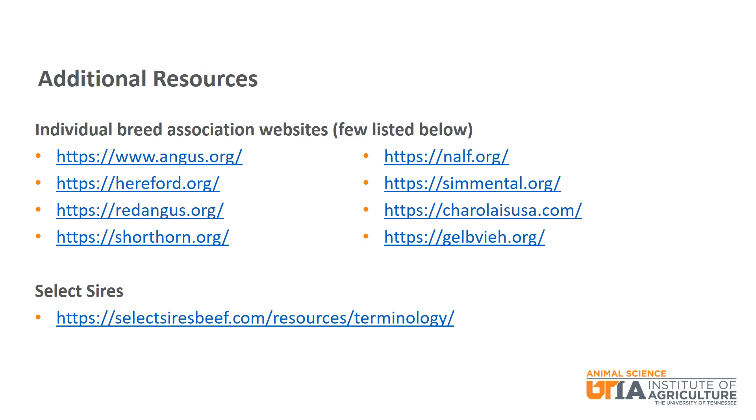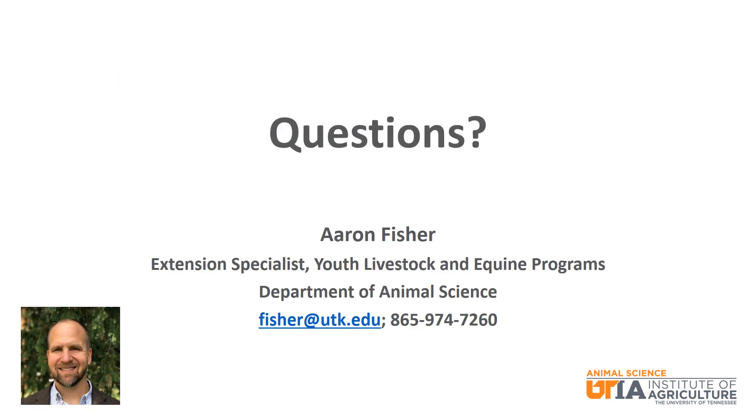For more resources regarding EPDs and selection indexes, the best places to check out are the individual breed association websites, which will have much more information about these tools as they relate to that specific breed. Select Sires also has a good summary of many of these tools in the resources section of their website. That wraps up our discussion of genetic selection tools for beef cattle. Please understand that we just highlighted the basics, and there are many more EPDs and indexes as well as more genetic selection tools. I wish you the best of luck as you progress through your beef cattle project. Thank you and have a great day.